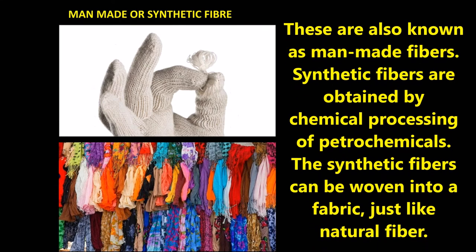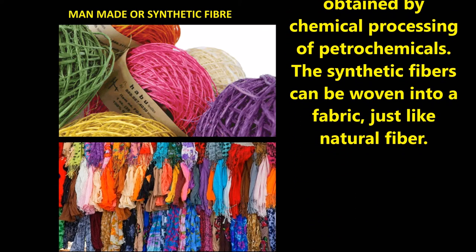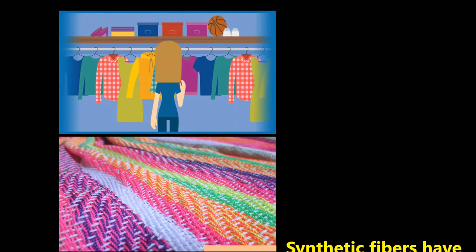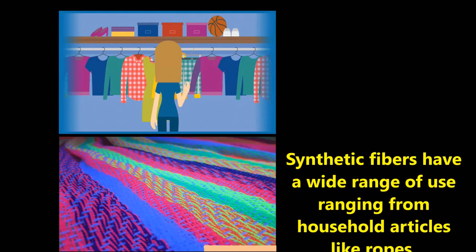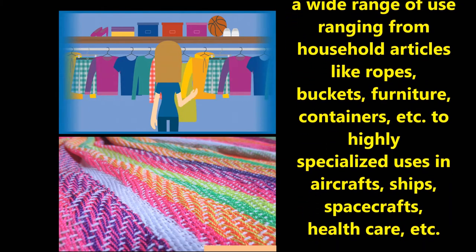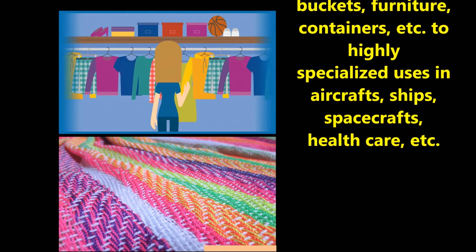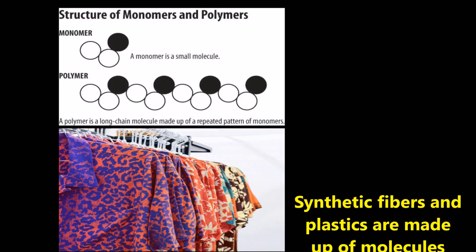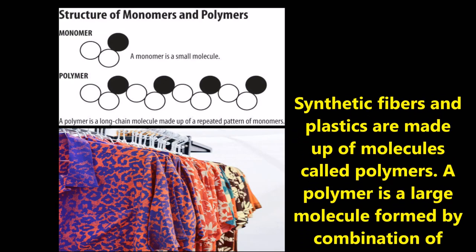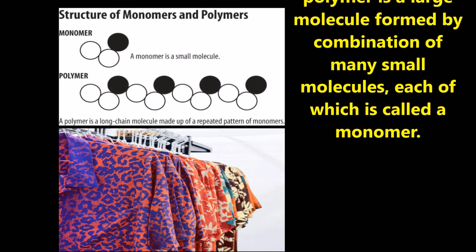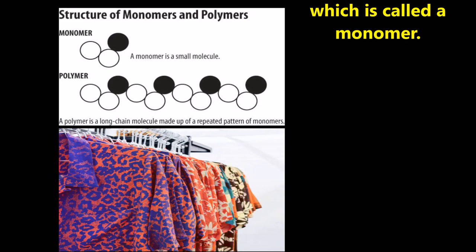Man-made or synthetic fibers are obtained by chemical processing of petrochemicals. They can be woven into fabric just like natural fibers. Synthetic fibers also have a wide range of uses, ranging from household articles like ropes, buckets, furniture, and containers, to highly specialized uses in aircraft, ships, spacecraft, and healthcare. Synthetic fibers and plastics are made up of molecules called polymers. A polymer is a large molecule formed by combining many small molecules, each of which is called a monomer.